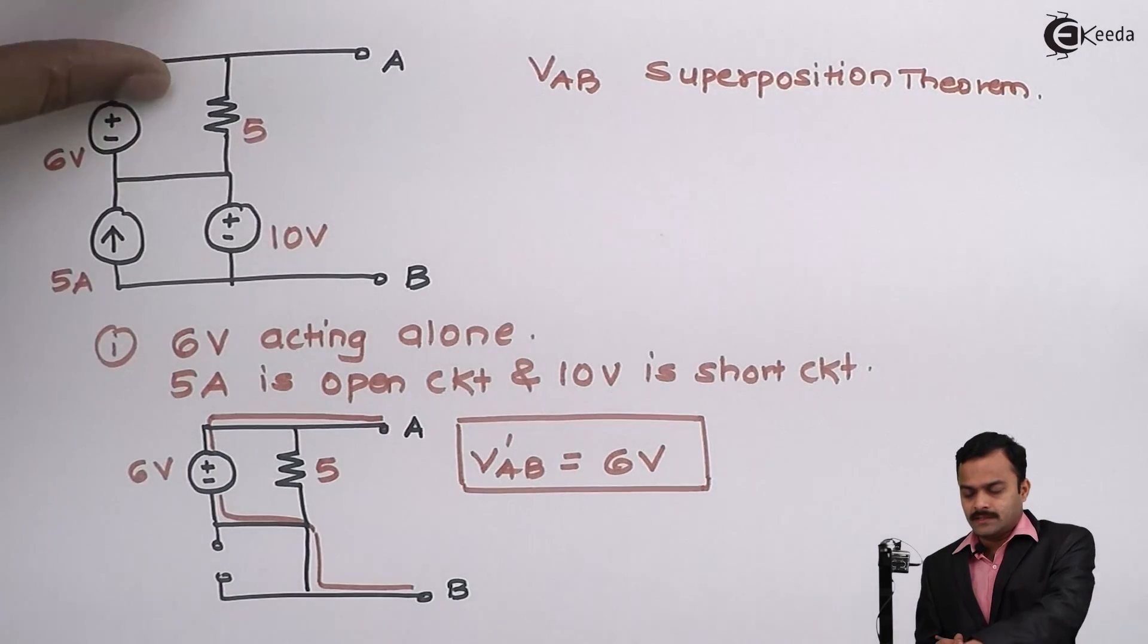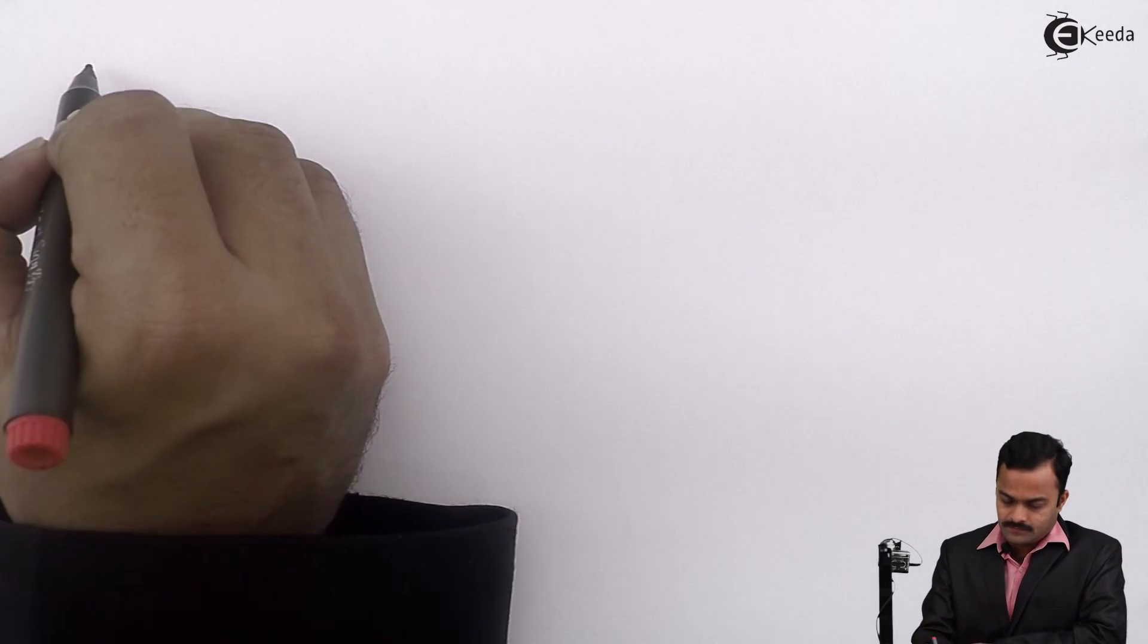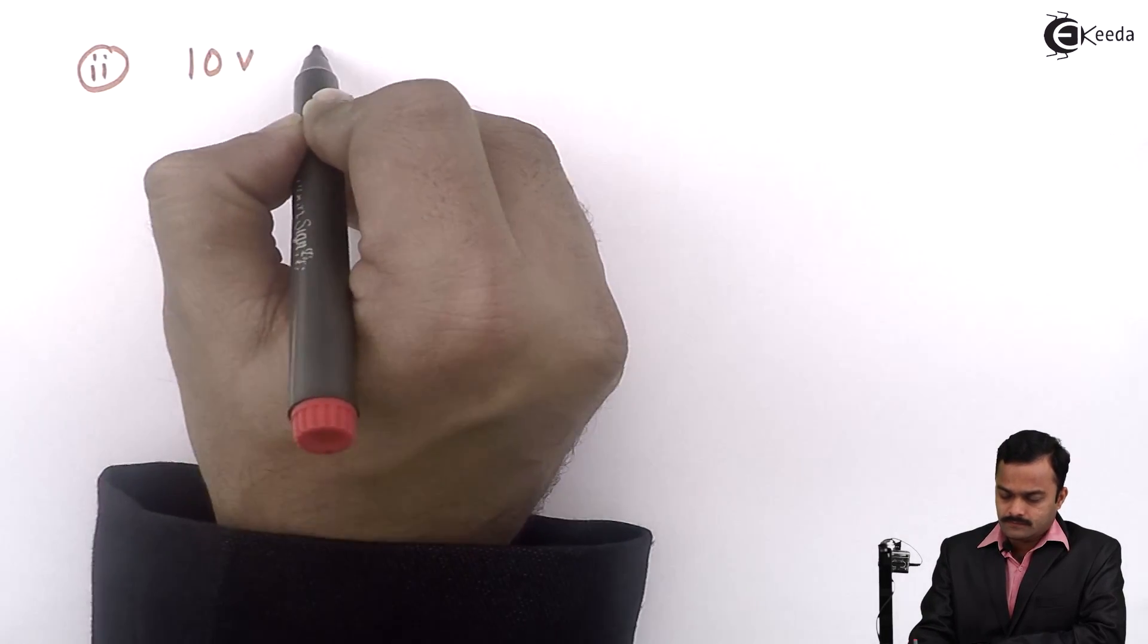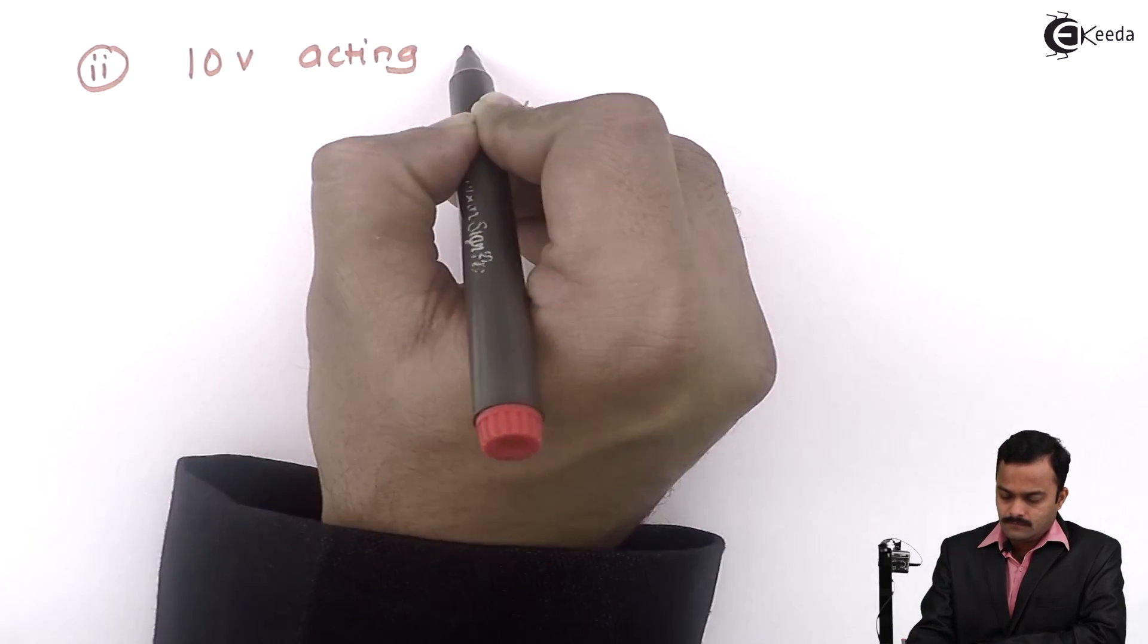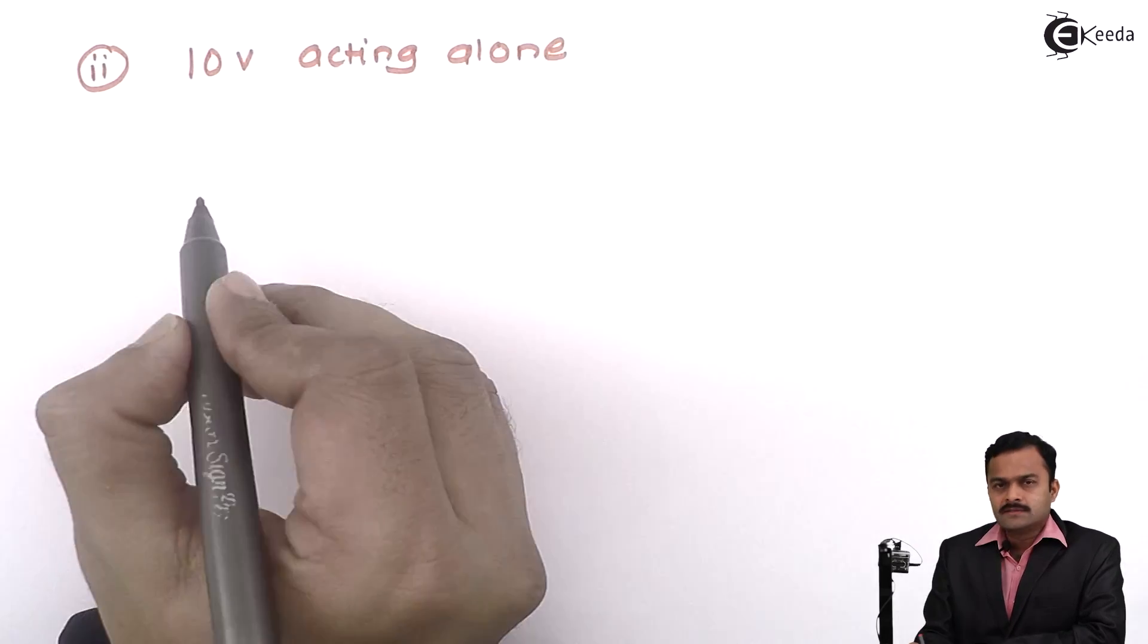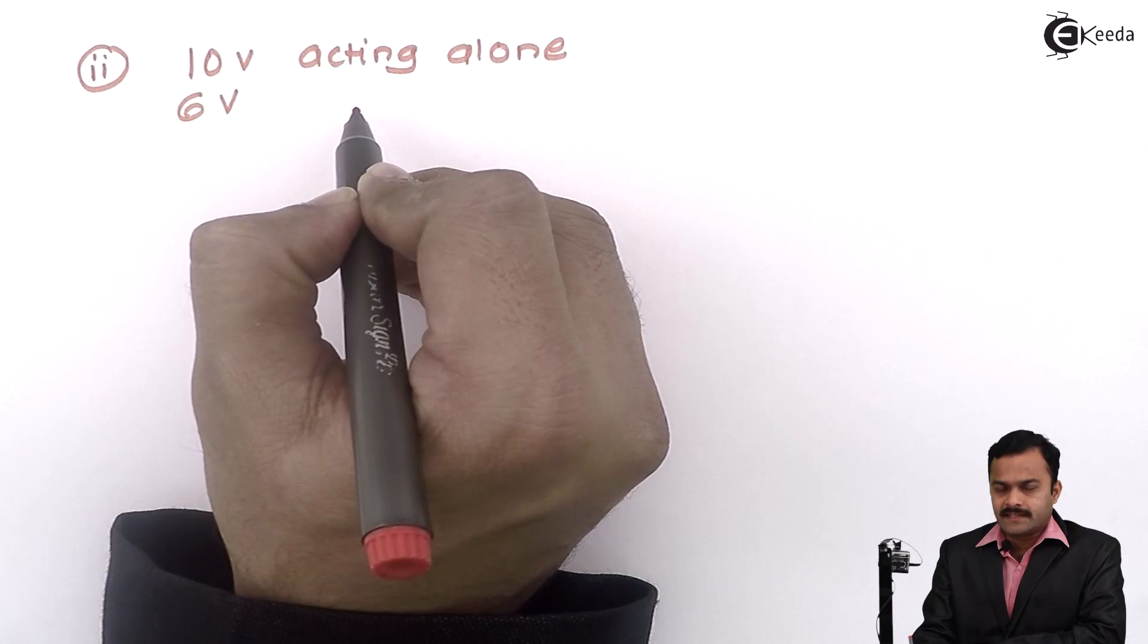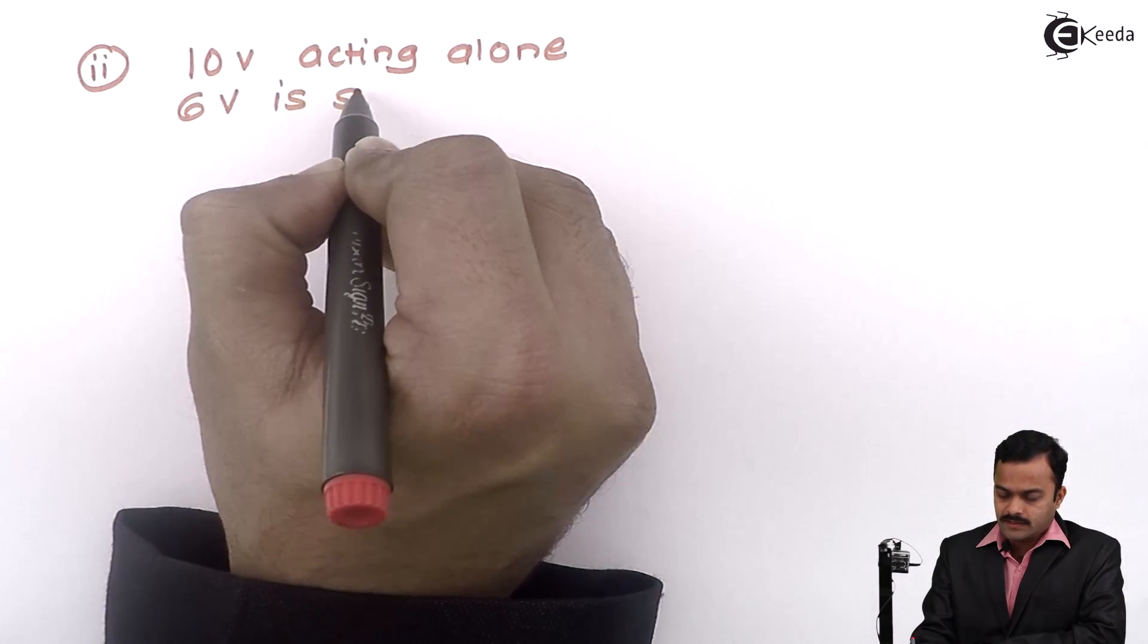Let's go to the second step. In the second step, I will consider second voltage source, that is 10V. So 10V acting alone. 6V is a voltage source, we will short circuit that, so 6V is short circuited.